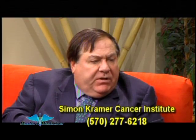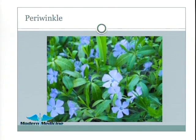The next plant is periwinkle — vinca rosa. They've been able to extract from the periwinkle plant a chemotherapy drug called vinblastine, and that revolutionized the treatment of testicular cancer in young men. Everybody knows the story of Lance Armstrong, who had widely disseminated stage four testicular cancer and was cured. Vinblastine was one of the drugs used to affect that cure.